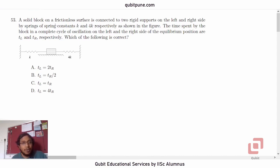A solid block on a frictionless surface is connected to two rigid supports on the left and right side by springs of spring constants k and 4k respectively as shown in the figure. The time spent by the block in a complete cycle of oscillation on the left and the right side of the equilibrium position are tl and tr respectively. Which of the following is correct? tl is 2tr, tl is tr by 2, tl is equal to tr, and tl is equal to 4 times tr.